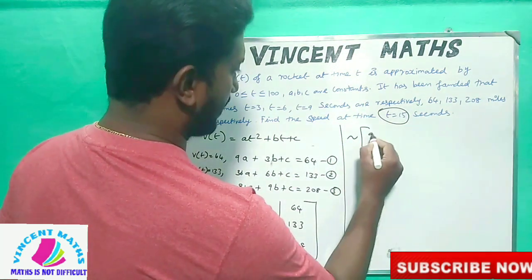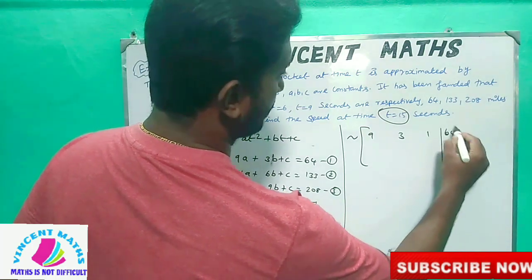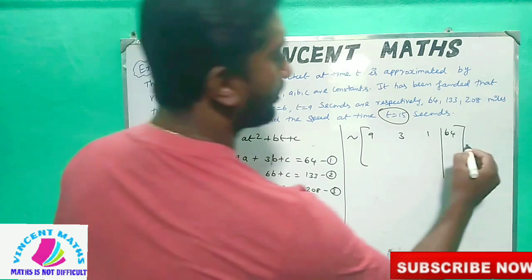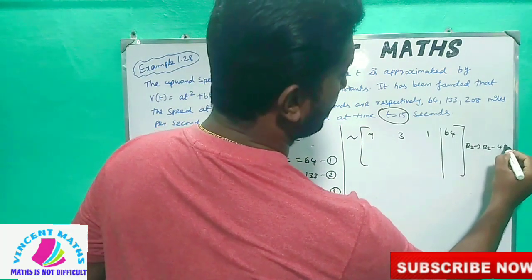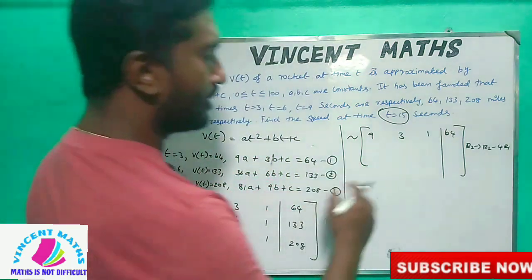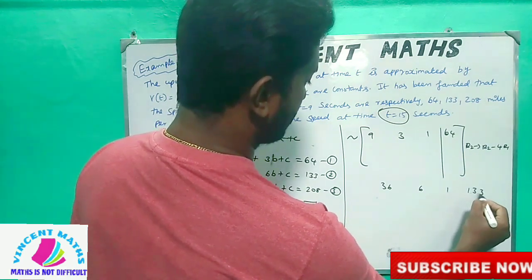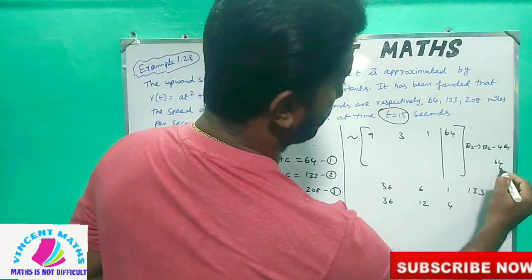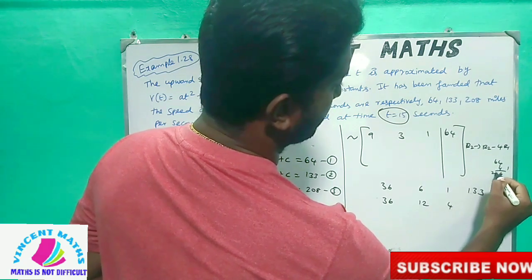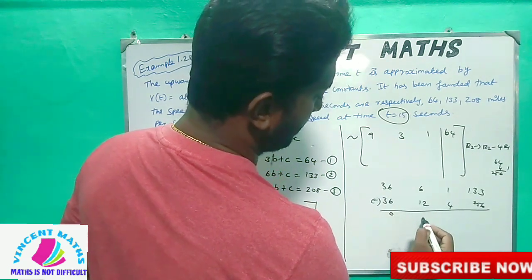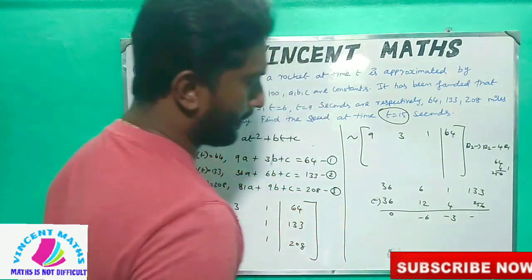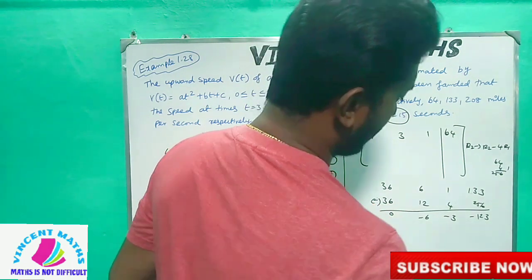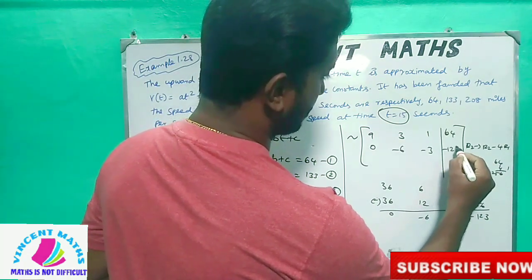We start with the matrix: row 1 is [9, 3, 1 | 64], row 2 is [36, 6, 1 | 133]. To eliminate the first column of row 2, we do R2 minus 4×R1. Multiplying R1 by 4 gives [36, 12, 4 | 256]. Then R2 minus 4×R1 gives [0, -6, -3 | -123].